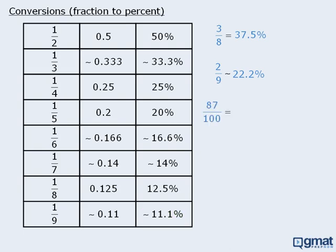What about the fraction 87 over 100? We don't have one-one-hundredth on our table, but any fraction with 100 in the denominator is quickly converted to a percent, since the numerator will be equal to the percent conversion. So 87 over 100 is equal to 87%.